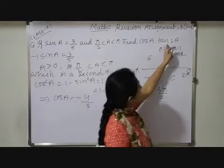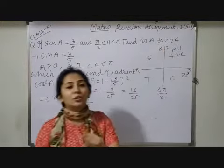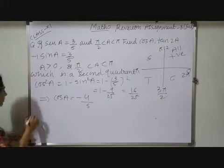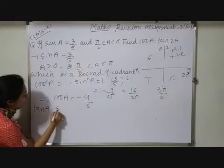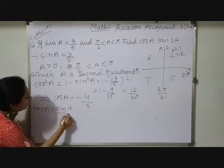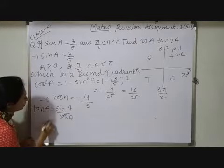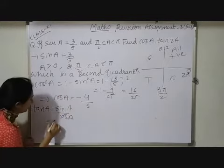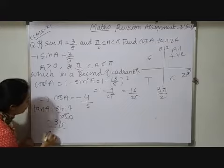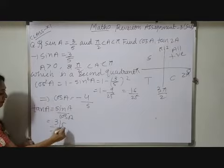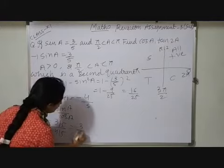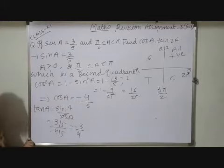Now next, here I have to find out tan 2A. So before finding tan 2A, here first of all we will find out tan A. Tan A equals, as we are knowing, sin A / cos A. So sin A here is already given, that is 3/5, upon -4/5. So 5 will be cancelled out. So this equals, we are looking here, -3/4.